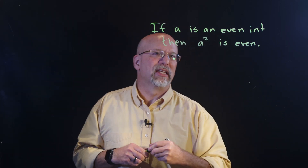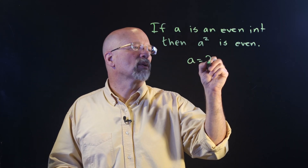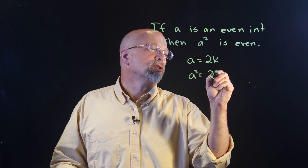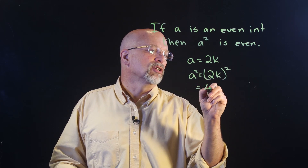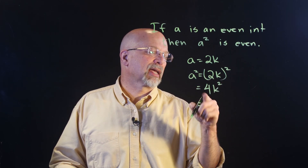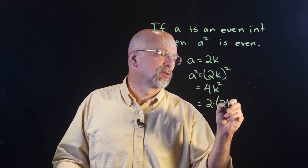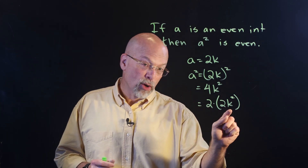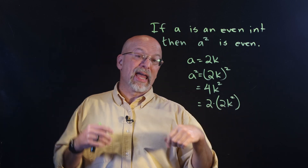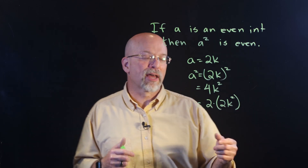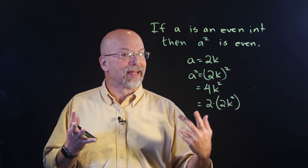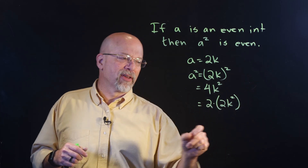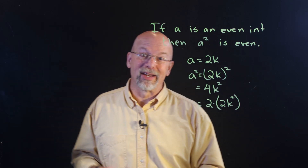So let's start with A equals 2K for some integer K. That means A squared equals (2K) squared, which is 4K squared, which I can write as 2 times 2K squared. We know K is an integer, and any integer times an integer is an integer, so K squared is an integer. Then 2K squared is an integer. So inside the parentheses we have an integer times 2 — A squared is even.